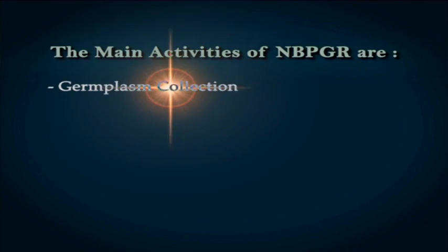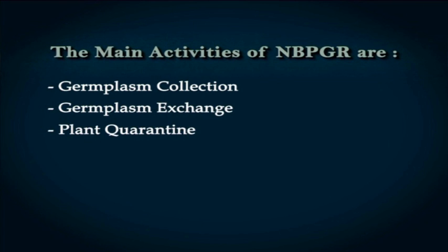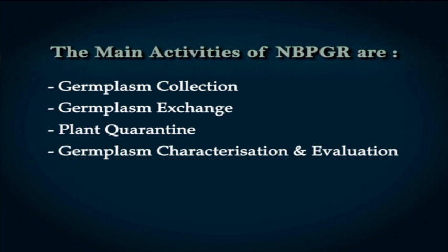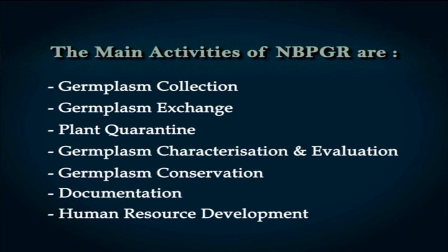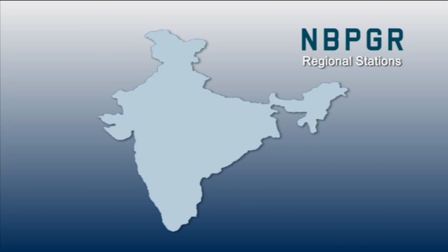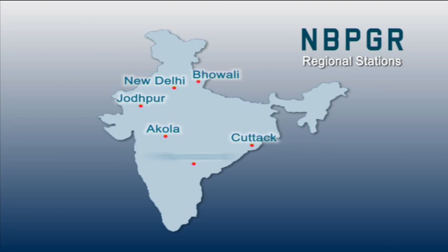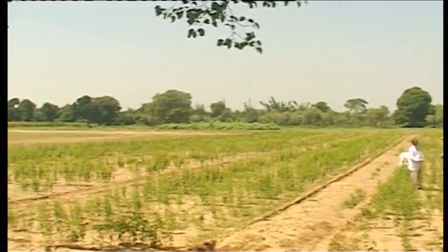The main activities carried out by NBPGR are germplasm collection, germplasm exchange, plant quarantine, germplasm characterization and evaluation, germplasm conservation, documentation and human resource development. The multifarious activities of NBPGR are carried out from its headquarters in the Pusa campus at New Delhi and from its 10 regional stations in different agro-climatic zones of the country.